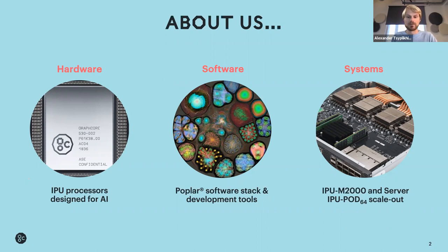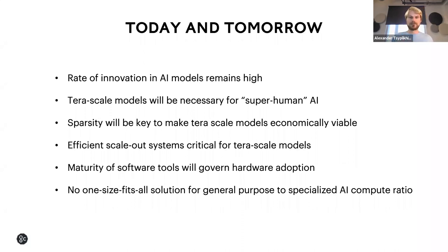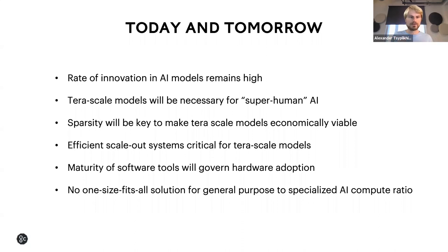These provide scalable deployments from small numbers that you can ramp up to tens of thousands of systems. Some of the observations and trends in AI models: the rate of innovation in AI models and algorithms remains high, so we need to adapt quickly and need something very flexible. Terascale models will be necessary for superhuman AI — a human brain has approximately 200 trillion weights or model parameters, so to automate human-level tasks we need models of a similar scale.